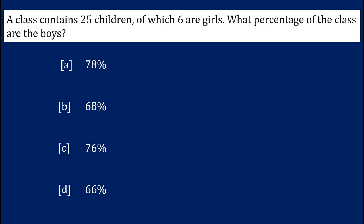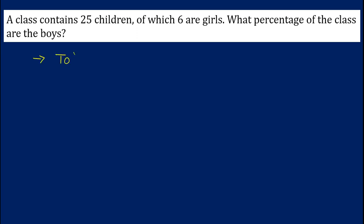A class contains 25 children, of which 6 are girls. What percentage of the class are boys? The total children in the class are 25, and the total number of girls is 6.